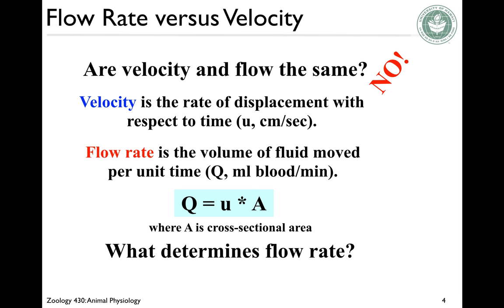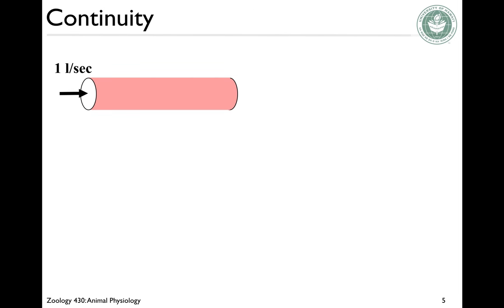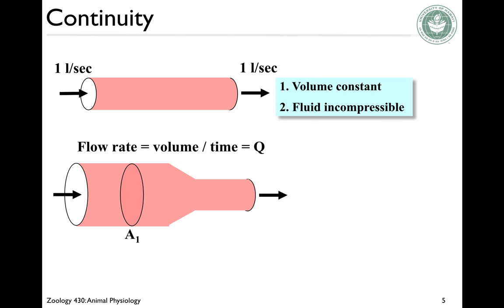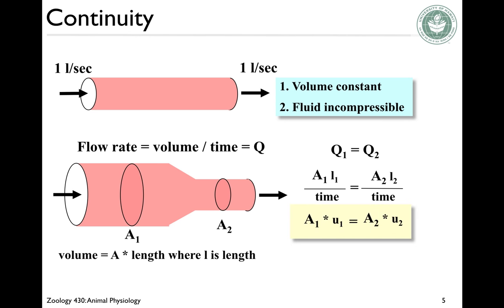What determines flow rate? If you have a closed vessel and a liter per second of fluid going in, you're going to have a liter per second coming out. That's because if the fluid is Newtonian — meaning it's not compressible — volume has to remain constant. So flow rate is volume over time. If you increase the cross-sectional area, you have to maintain the same flow rate. Setting the two sides equal, time is the same. So if one cross-sectional area is bigger, the flow velocity will be slower, and if the cross-sectional area is smaller, the flow velocity will be faster.